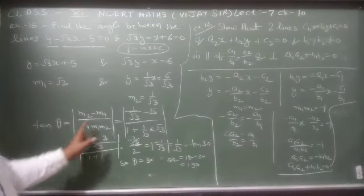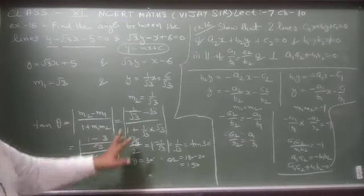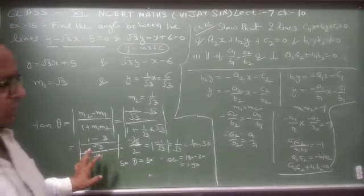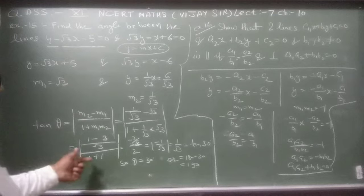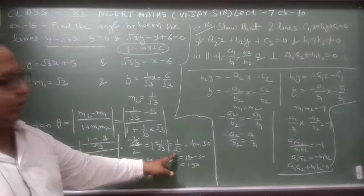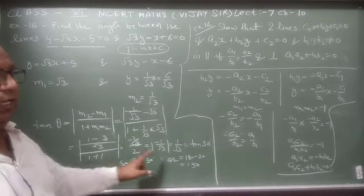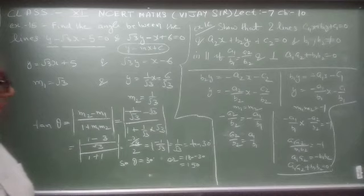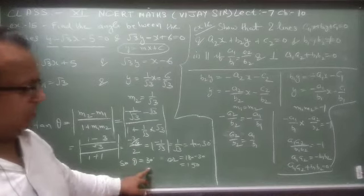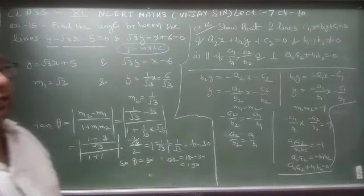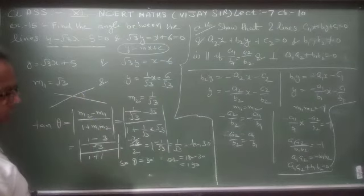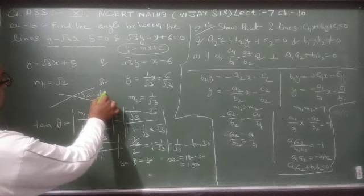Formula में m1 = √3 और m2 = 1/√3 put करो। Simplify करने पर tan θ = 1/√3 आता है। Absolute value लेते हैं — positive लेते हैं। tan 30° = 1/√3, तो θ = 30°। दो lines cross करती हैं तो एक angle 30° (acute) और दूसरा 180° - 30° = 150° (obtuse) होगा।